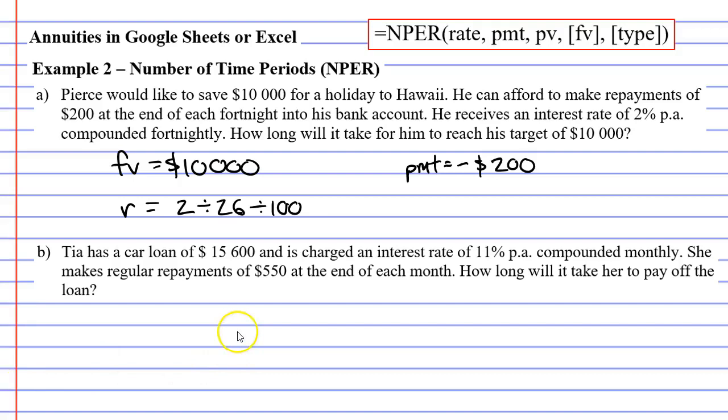Going back to the slide, we can see our formula. We've got our rate, which is a calculation at the moment. We've got our repayment of negative $200. But we don't have a present value, and it doesn't mention one in the question. So we'll assume the present value is $0, meaning Pierce had $0 in his bank account to start with.